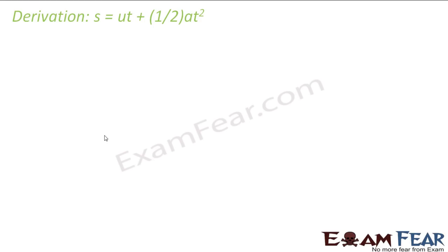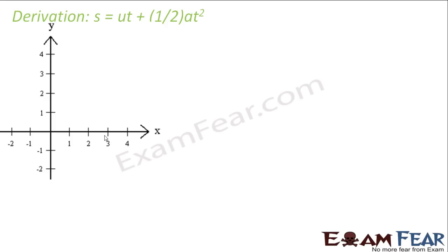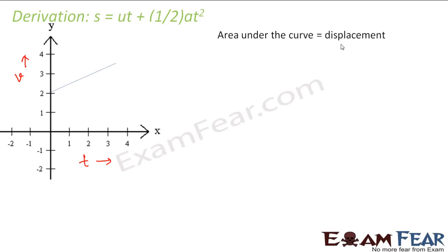Now let us look at the second equation: s = ut + ½at². To derive this, we need an expression for displacement. The area under the velocity-time graph gives us displacement. So let us look at a generalized velocity-time graph and find the area under that curve, which equals the displacement of the object.